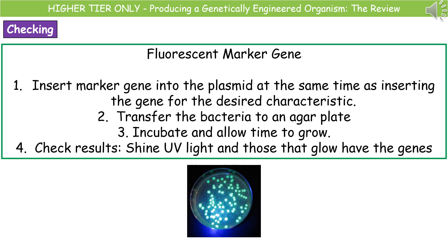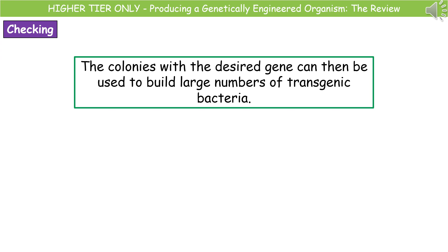If we're using a fluorescence gene as our marker, we do the same thing — insert the fluorescent marker gene into the plasmid at the same time as our desired characteristic gene. We transfer those bacteria onto an agar plate, incubate them, and give them time to grow. To check the results, we shine an ultraviolet light onto the plate — any colonies that glow have the genes, so we select those and allow them to replicate in large numbers. The key idea is to only grow bacteria that have the desired characteristic gene; without that checking stage, we could produce large numbers of bacteria that hadn't taken up the gene.